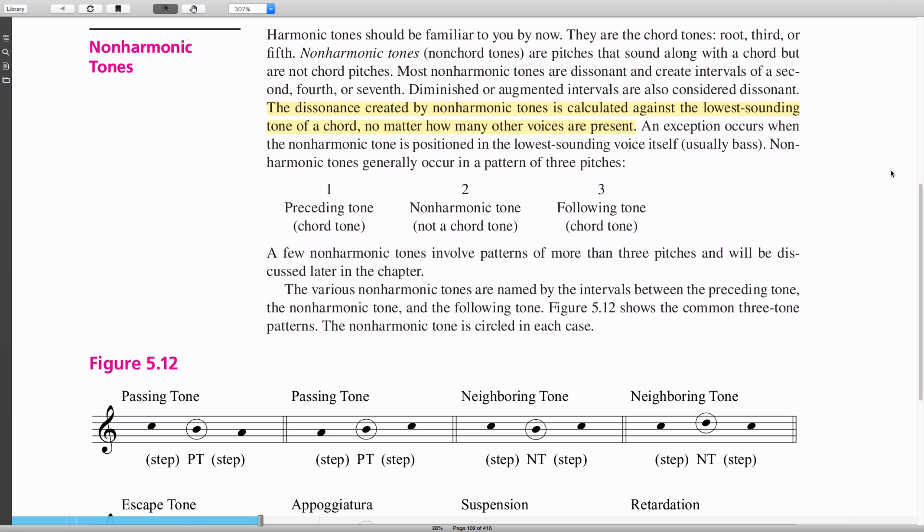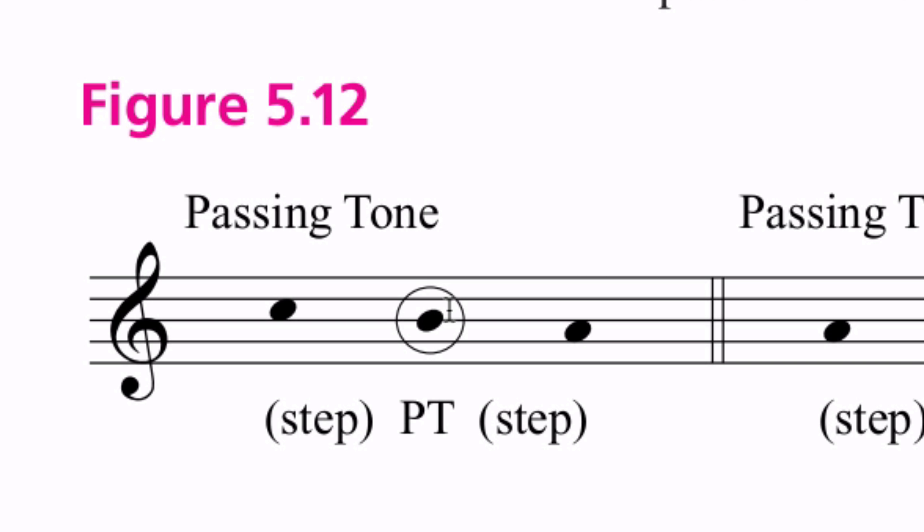Let's look at an example of this thing happening. Here I have what's called a passing tone. It's a type of tone that's not part of the current harmony that happens when you keep on going in the same direction in a melody by step.